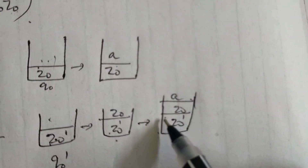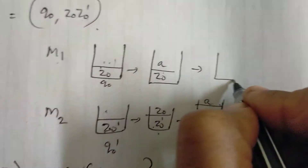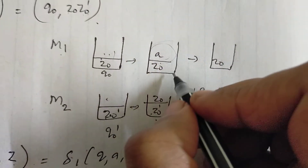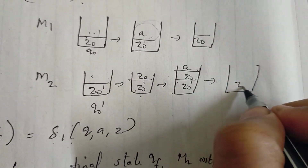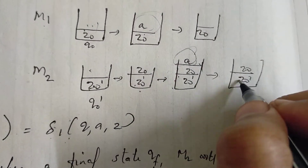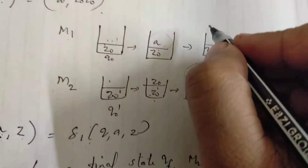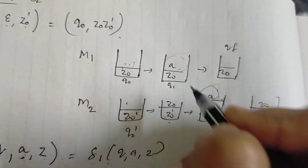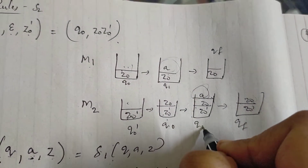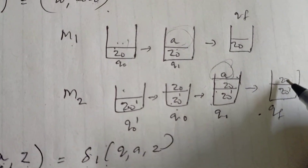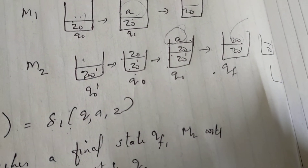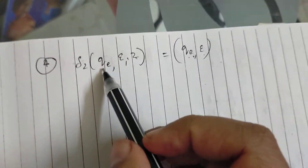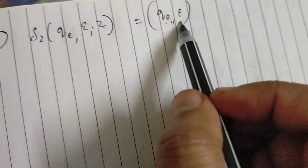Now let's do the instantaneous description. M2 needs to copy M1 in the final state. In the final state of M1, M2 transitions to qe. When M2 goes to qe without any input symbol, it pops all stack items, making the stack empty. The remaining symbol is z0-prime, meaning the stack is empty.